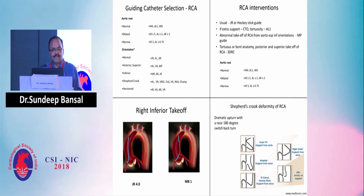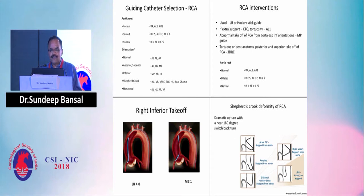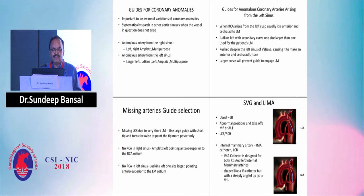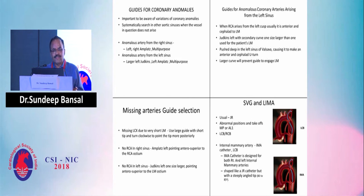For an abnormal right coronary takeoff where the ostium looks up and the artery comes down, specific catheters like the Shepherd's Crook catheter or Amplatz left can be used. For coronary anomalies from the right sinus, Amplatz left, Amplatz right, or multipurpose catheter is appropriate. For an anomalous coronary from the left sinus, use Amplatz left or a larger Judkins catheter.